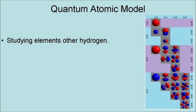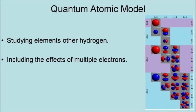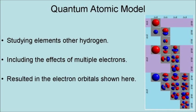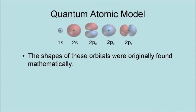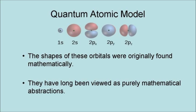Further developments have come from studying elements other than hydrogen, including the effects of multiple electrons. These studies resulted in the electron orbitals shown here. They are the places in an atom where electrons can actually be found.